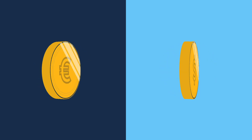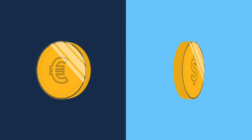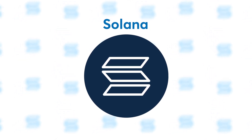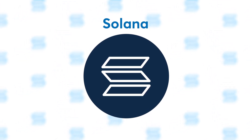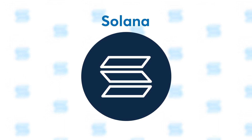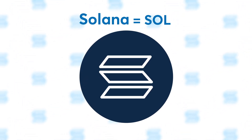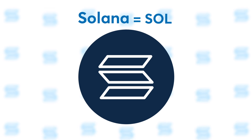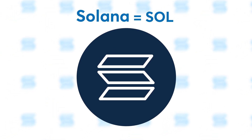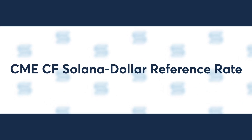As cryptocurrencies may be priced in multiple fiat currencies, the base currency identifies the currency of the crypto asset. Let's review one crypto asset, Solana, and how the naming convention can provide information on three parameters. Each crypto asset is represented by a corresponding symbol, which is incorporated into the name of each corresponding reference rate and real-time index. The reference rate is CME CF Solana Dollar Reference Rate.